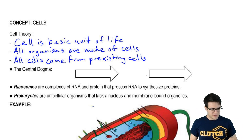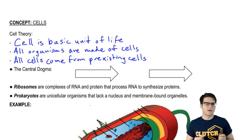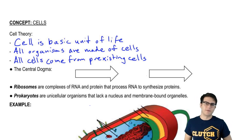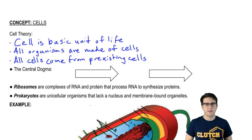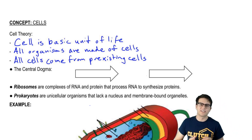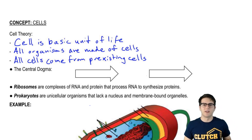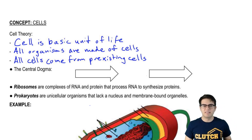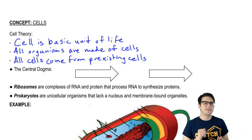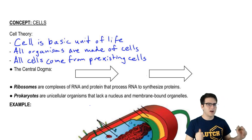One of the main functions of all cells is to read their genetic information, take that message, and do something functional with it. The way this is carried out is a process called the central dogma. Now, this name is actually a bit of a misnomer — even the guy who invented this term later said he didn't really understand what dogma meant. So don't get hung up on the name, but understand the process.